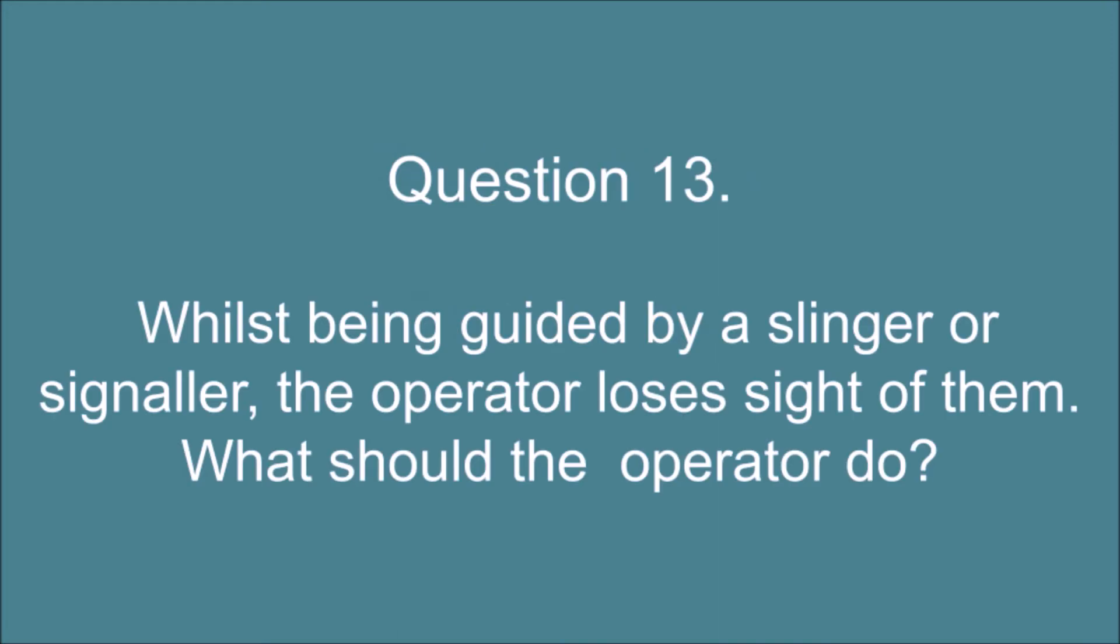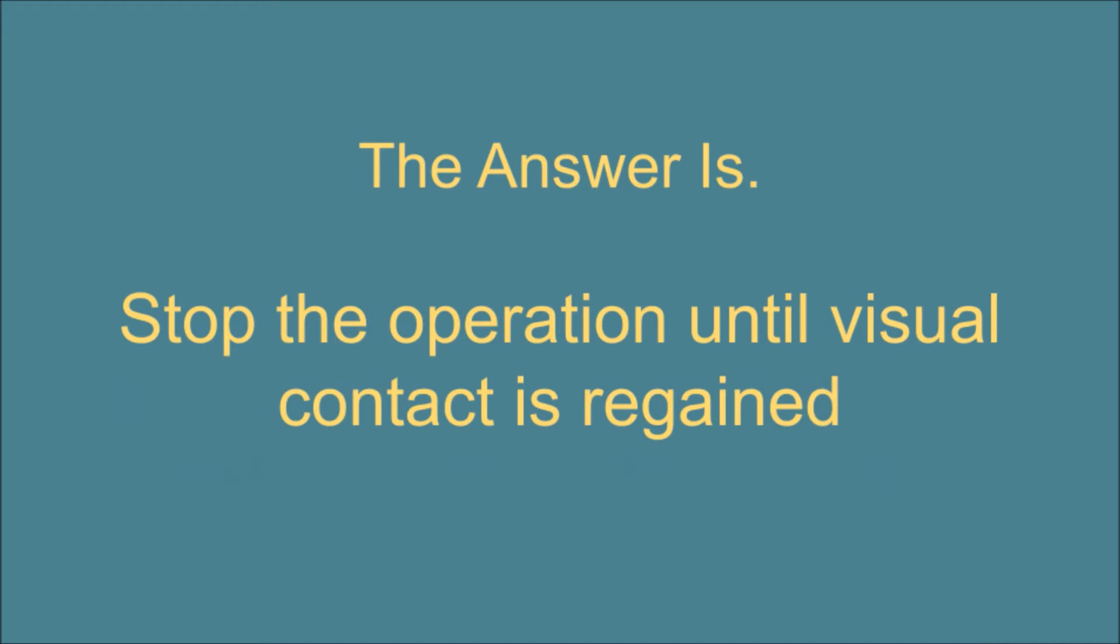Question 13. Whilst being guided by a slinger or signaler, the operator loses sight of them. What should the operator do? The answer is: Stop the operation until visual contact is regained.